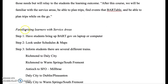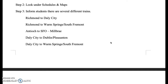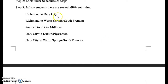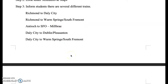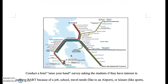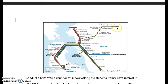The first part will be familiarizing learners with service areas. I'll have the students bring up BART.gov on their laptop or computer. There they can look under the schedule and maps and I'll inform the students of the several different trains that they could take. This should also bring up the map, which is an informational learning material that will be posted in front of the classroom.